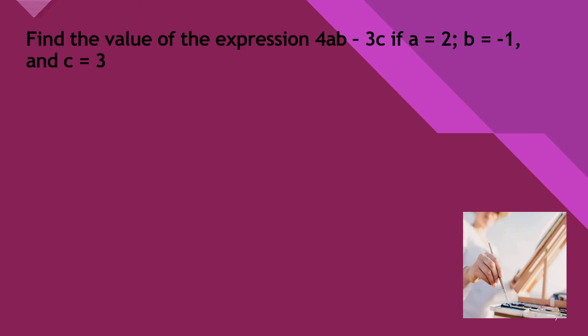Now find the value of the expression 4AB - 3C where A equals 2, B equals -1, and C equals 3. So let us see, 4AB - 3C. So we got 4 × 2 × -1 minus 3 × 3.